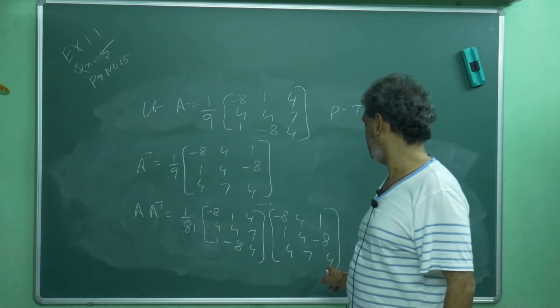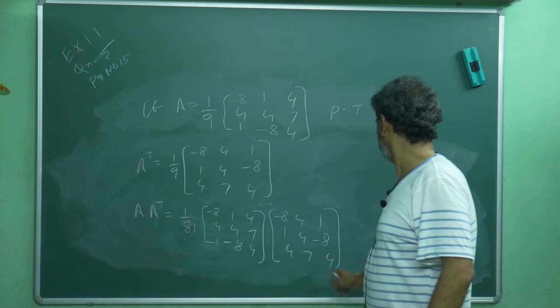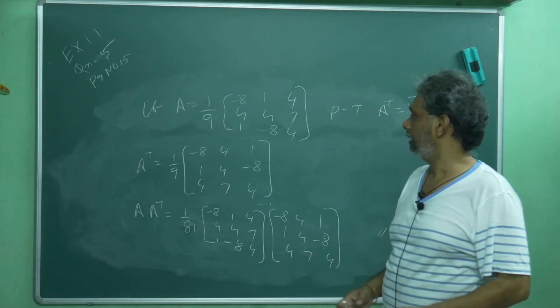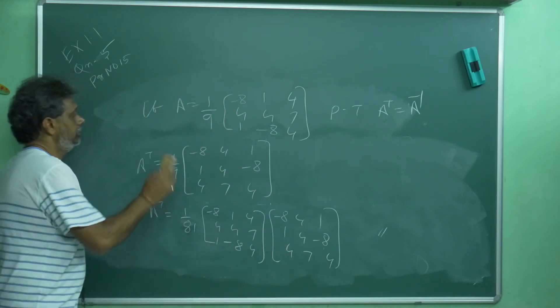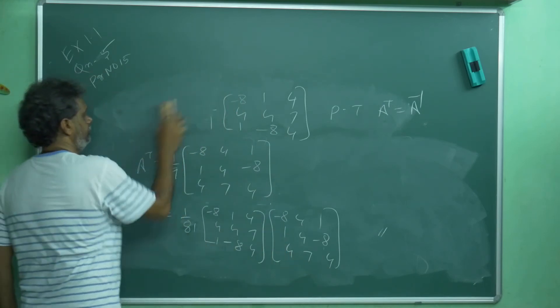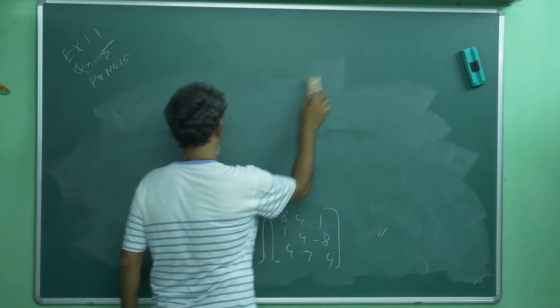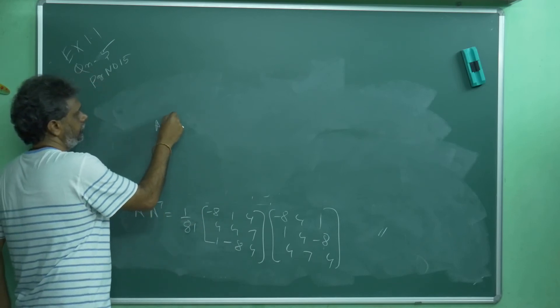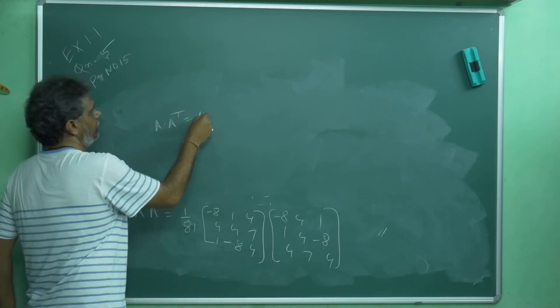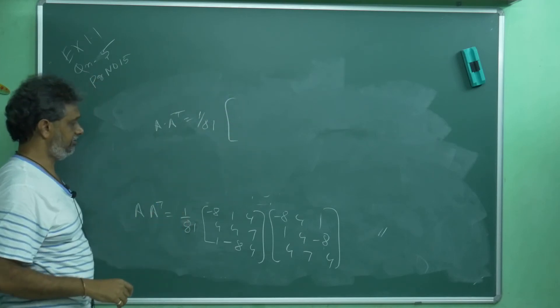Suppose this element, if you want, third row, third column. If I multiply this, this position I will get. Now, I will multiply.